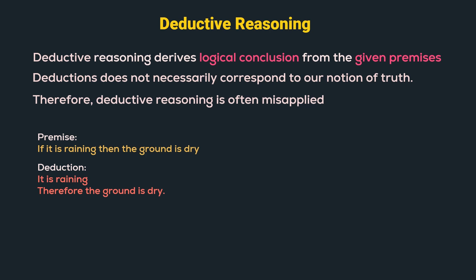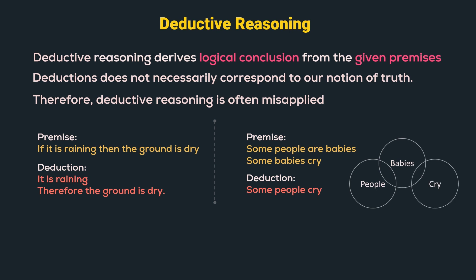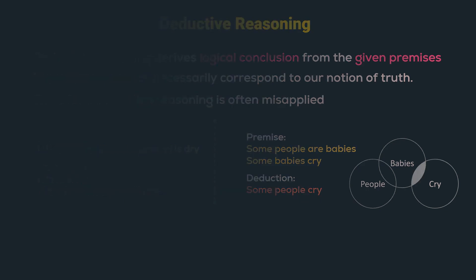For example, given the premise, some people are babies and some babies cry, we might have a deduction, some people cry. However, it is an invalid deduction as we are not told that all babies are people and therefore, it is logically possible that the babies who cry are actually not people. Now, let us move on to inductive reasoning.